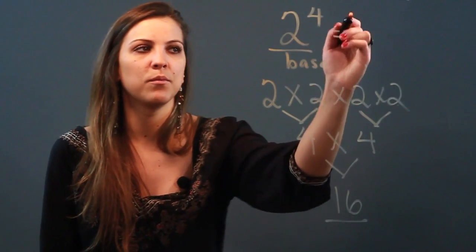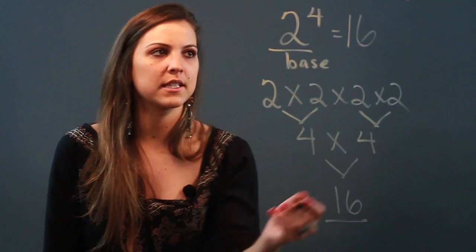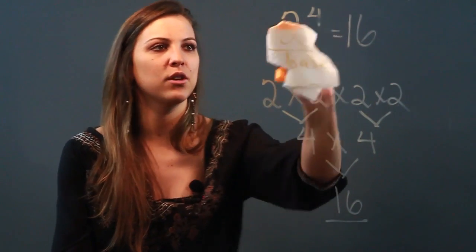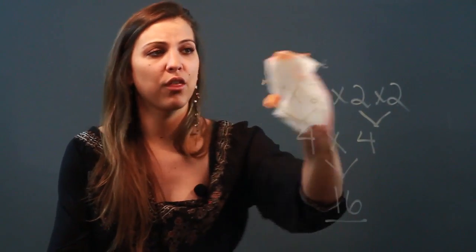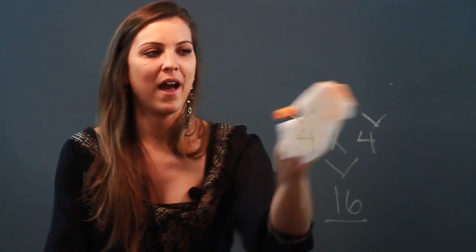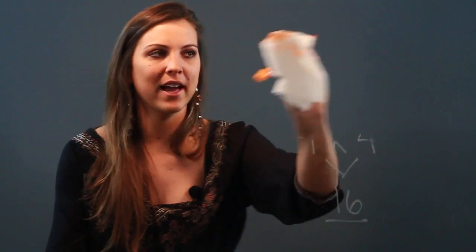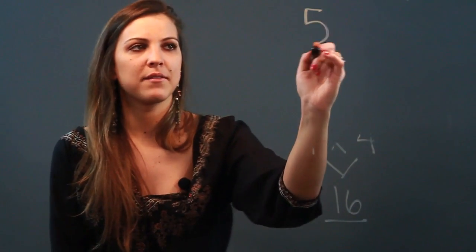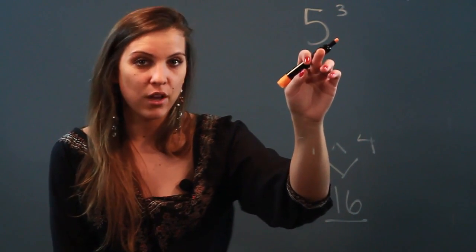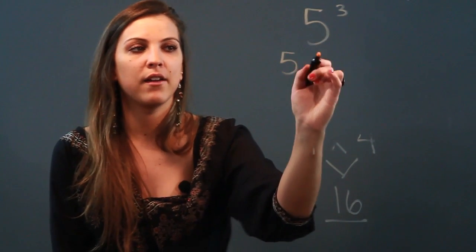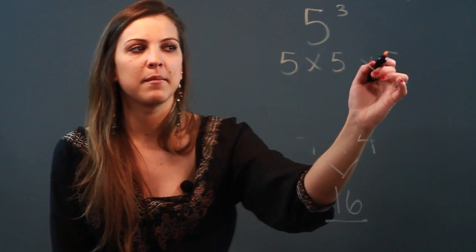All right, one more quick example. Let me erase these for you. If we had 5 to the third power, 5 is your base and 3 is your exponent. So 5 to the third power tells me that I'm going to multiply 5 by itself three times: 5 times 5 times 5.